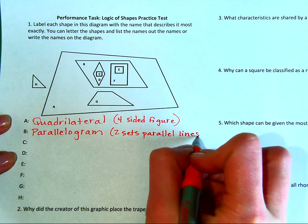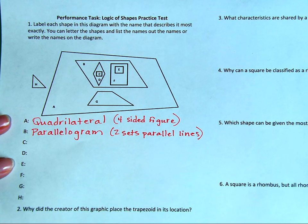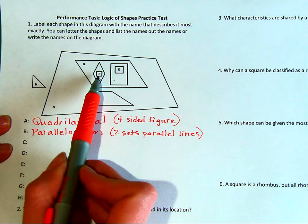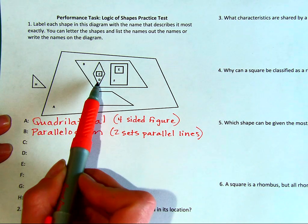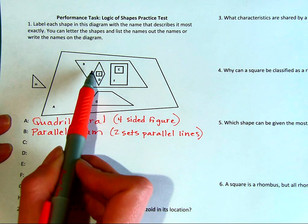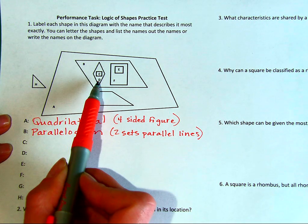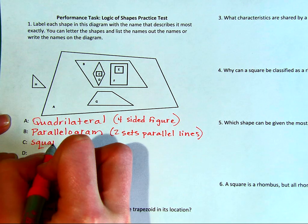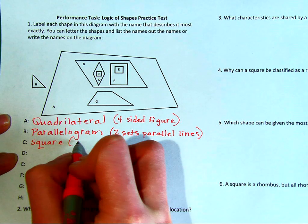It's a parallelogram because it has two sets of parallel lines. Letter C is inside of the parallelogram, but if we look a little closer, it's actually inside of figure D. Figure D has all equal sides, so figure D is a rhombus. But inside of the rhombus is a square, so figure C is a square — it's inside D because it has four equal sides.